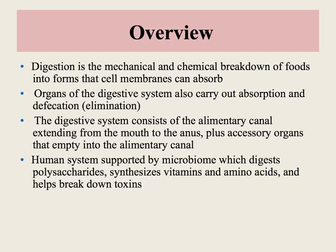The digestive system, also called the alimentary canal, goes from the mouth to the anus and also includes some accessory organs — other parts not found in that canal but also providing substances necessary for digestion. Our human digestive system is also well supported by a microbiome, a collection of bacteria, which help us digest the polysaccharides that we can't break down, synthesize some important vitamins for us, and also help detoxify the things that go through our digestive system.